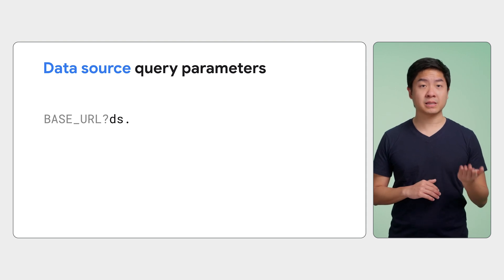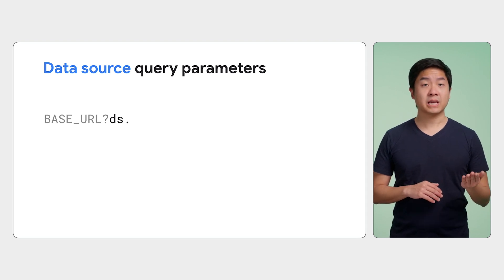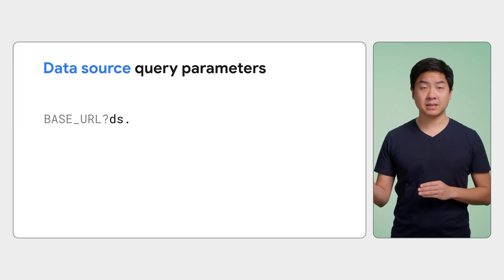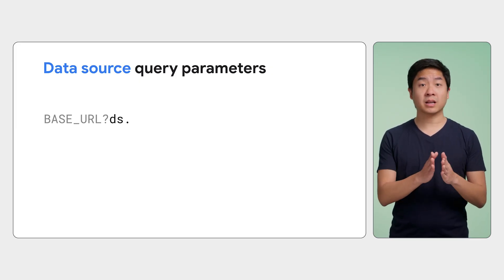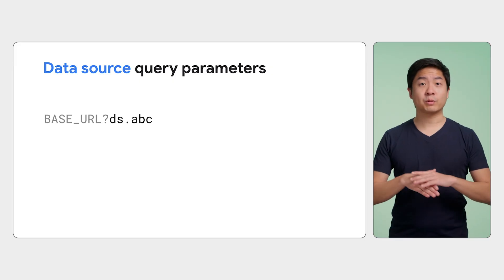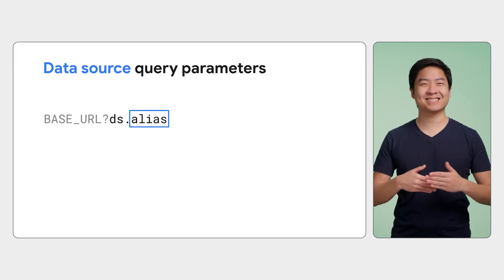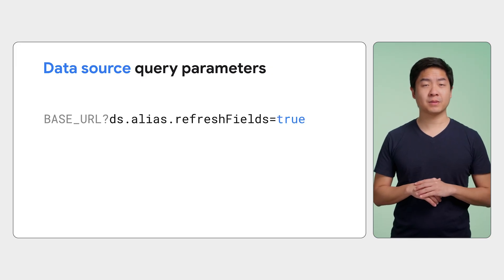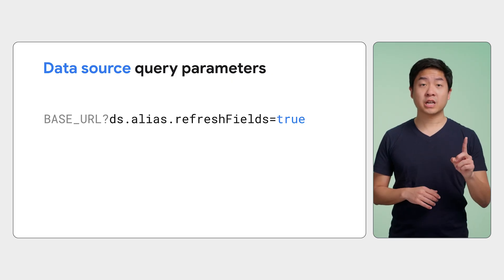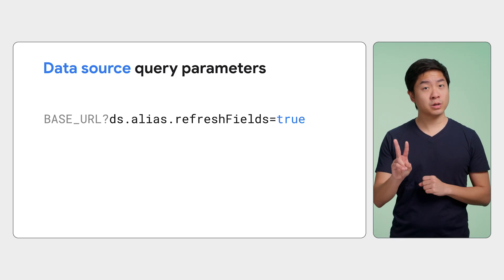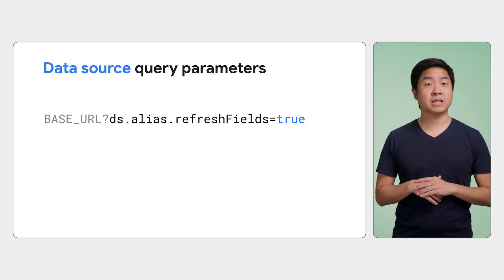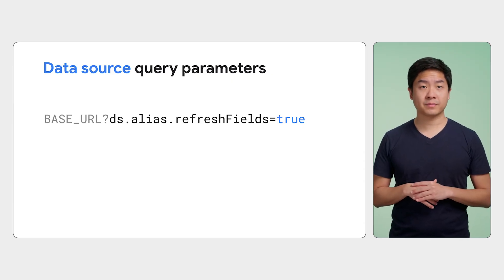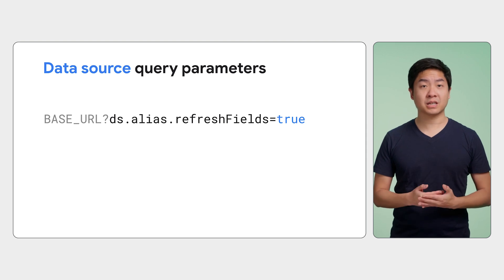For the common data source query parameters, you have the refreshFields parameter, which if set to true, configures Looker Studio to check for any schema changes and update the fields of the data source in the generated report. This gives you the flexibility to accommodate schema changes in an underlying data source when generating a new report. Another important parameter is the connector parameter: if set, the Linking API URL will replace the data source with what's configured in your data source query parameters; otherwise, the original data source will be preserved and updated with your data source parameters.